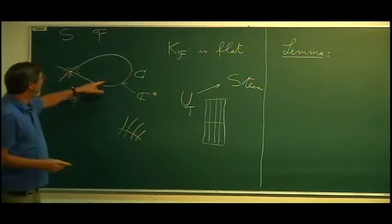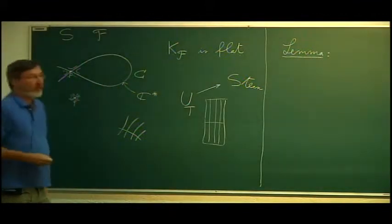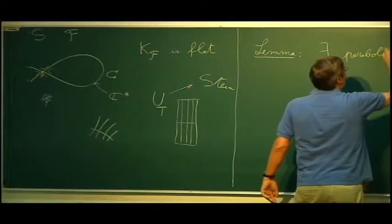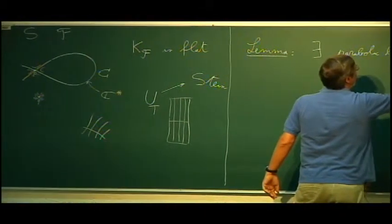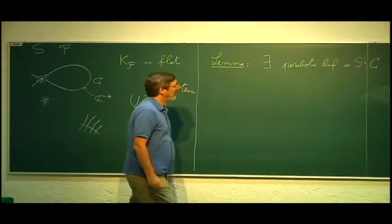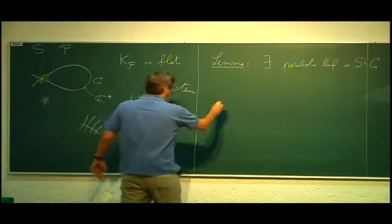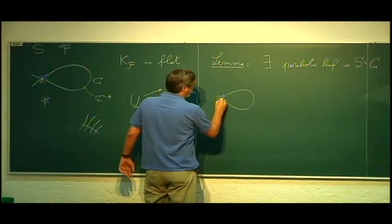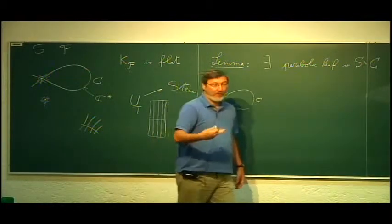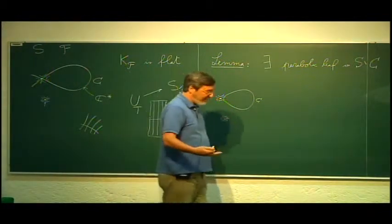The first lemma says: outside this C*, which is a parabolic leaf, there exists at least another parabolic leaf — uniformized by C — in S minus C. This is proved by contradiction. Suppose all the leaves outside C are hyperbolic. Then we can put on these leaves the Poincaré metric, getting a metric on the canonical bundle, and we get that the curvature of this metric is a closed positive current.